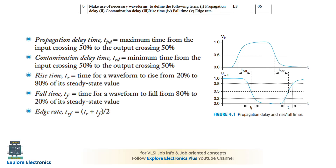Next question: use necessary waveforms to define propagation delay, contamination delay, rise time, fall time, and edge rate. Propagation delay is the maximum time from the input crossing 50% to the output crossing 50%. In CMOS, when input rises the output falls — we measure from when the input crosses 50% to when the output crosses 50%. Contamination delay is the minimum time from the input crossing 50% to the output crossing 50%.